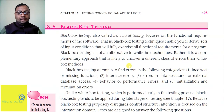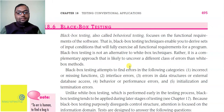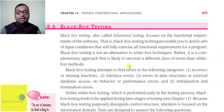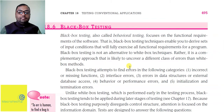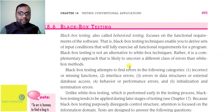Interface errors: button sahi tarike se arrange nahi kiye, ya koi button sahi press nahi ho raha, ya list view, combo box, check box, radio buttons mein koi problem hai. Errors in data structure aur database access: stack aur queue mein difference na rakha ho, items sahi add na ho rahe hon, ya database access galat ho rahi ho. Aur behavior aur performance errors, reliability errors: jo kaam ho raha hai woh client ke required time ke mutabiq ho raha hai ya nahi. Initialization aur termination errors bhi dekhe jate hain.